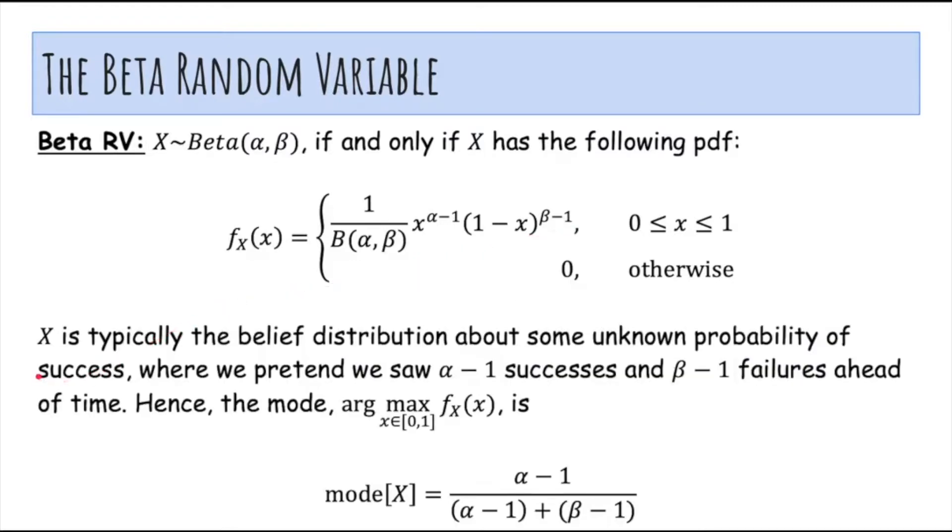So in general, x is typically the belief distribution about some unknown probability of success, where we pretend we saw alpha minus 1 successes and beta minus 1 failures ahead of time. And notice that this is pretty similar to the binomial mass function, but here, the probability distribution is over x. x is the probability of success, which we do not know, whereas in the binomial, we did know the probability of success, and we're taking the distribution over the possible outcomes of the flips.